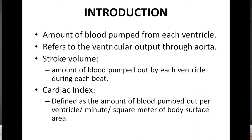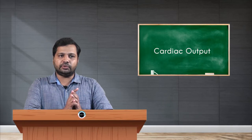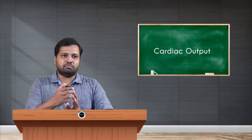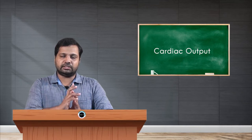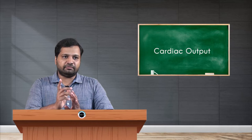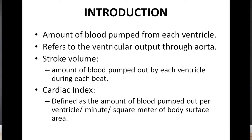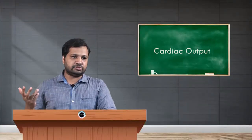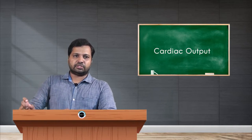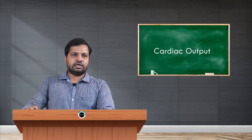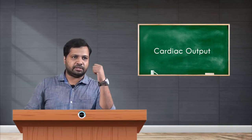Before going to the physiological and pathological variations, we will see some definitions related to cardiac output. First, stroke volume is the amount of blood pumped out by each ventricle during each beat. Second, cardiac index is defined as the amount of blood pumped out per ventricle in a minute per square meter of the body surface area.